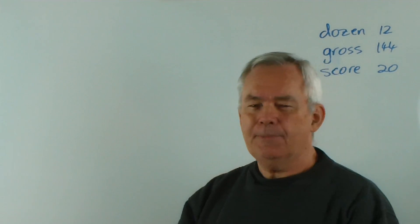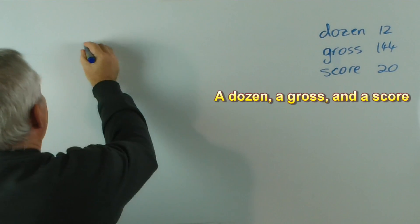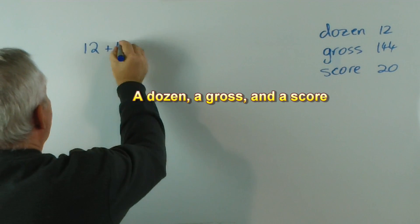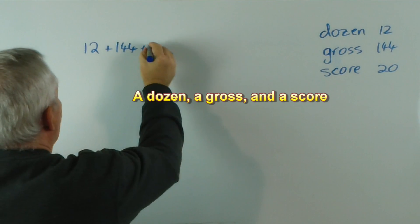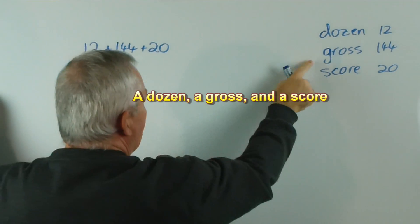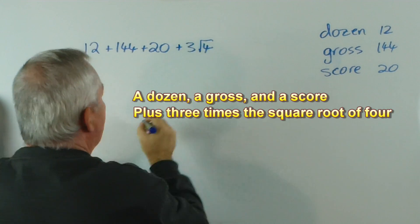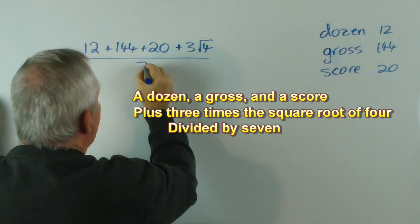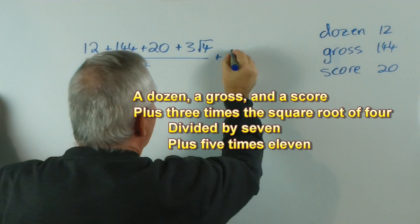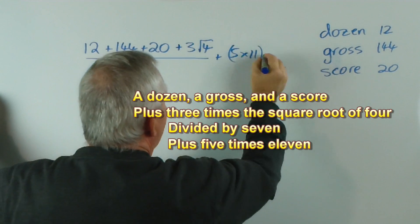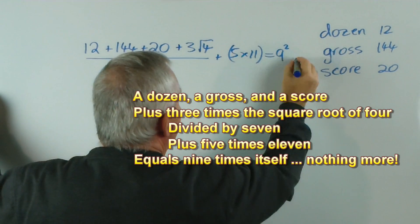A dozen, a gross and a score. There they are, a dozen, a gross and a score. Plus three times the square root of four, divided by seven, plus five times eleven, equals nine times itself, nothing more.